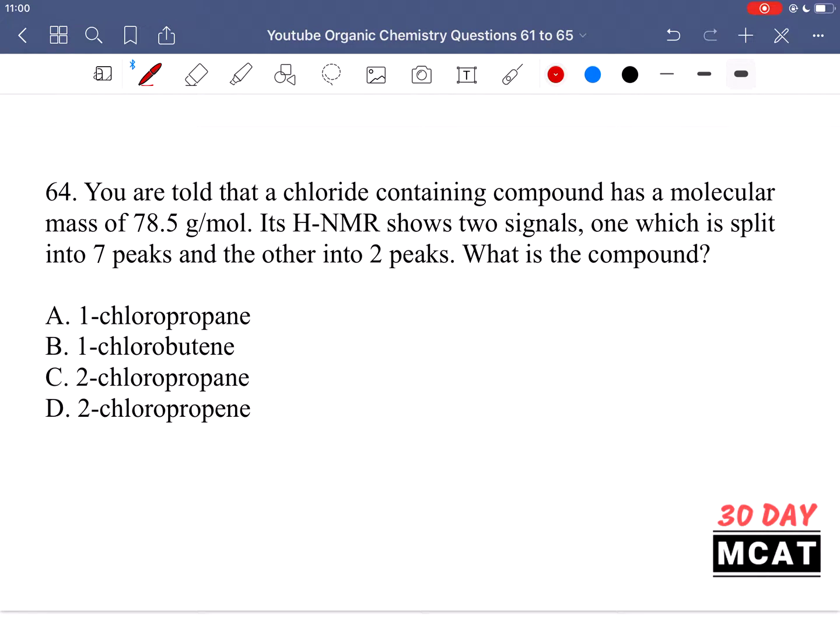Question 64 says you're told that a chloride containing compound has a molecular mass of 78.5 grams per mole. Its proton NMR shows two signals, one which is split into seven peaks and the other into two peaks. What is the compound? For this, just remember the N plus one rule. If you have one carbon and adjacent to it you have a carbon with three hydrogens in the same environment, then the signal for hydrogens on the carbon on the right will be split by the hydrogens on the left.